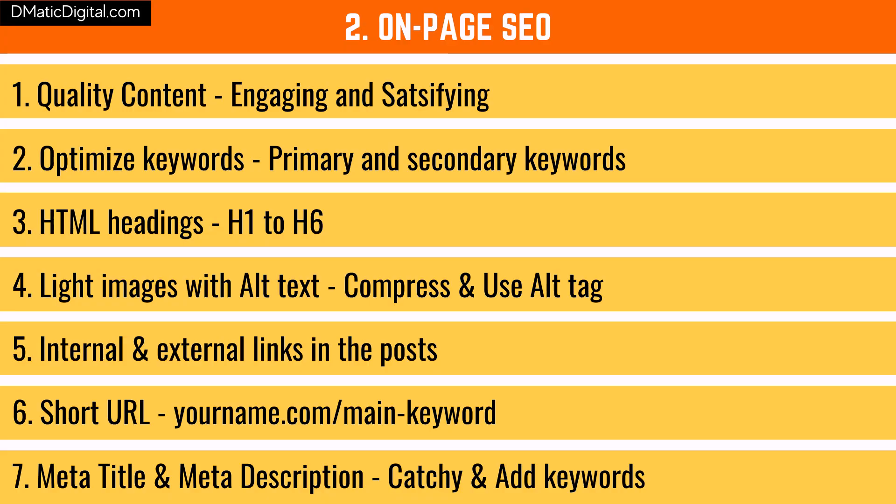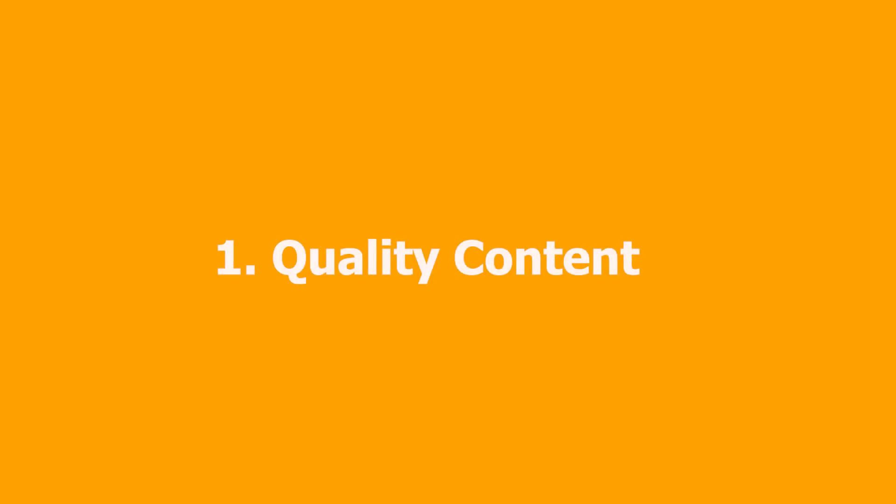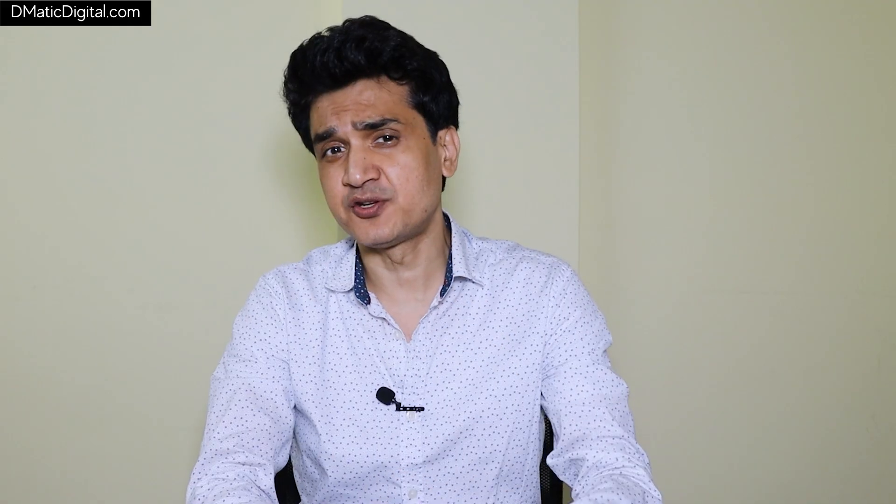Perfect technical SEO doesn't mean your website will rank — it makes your website eligible to rank. After technical SEO, the next step is on-page SEO. In on-page SEO, you optimize individual posts and pages. Here's a checklist: your content should be engaging and satisfying to readers. Second, optimize keywords — target main keywords and LSI keywords on each respective page. SEMrush is an excellent tool for keyword research.